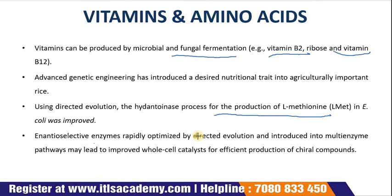The enantioselective enzyme rapidly optimized by directed evolution was introduced into the D-methionine pathway and may lead to improved whole-cell catalysts for the efficient production of carbon compounds. The improved hydrogenase increased productivity by 5.4-fold at 90% conversion of the substrate.